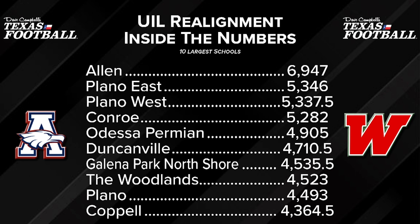If you're wondering what the fly in the ointment for a hypothetical Class 7A is, you're staring at it with Odessa Permian — there's no other school around them to play. A 7A would make sense for Allen and Plano since they could play Duncanville and Coppell, but it does not make sense for Permian. Duncanville and Galena Park North Shore are sixth and seventh — very close in enrollment. Coppell enters the top 10 for the first time at 4,364 — still that rare one-school suburb in the DFW metroplex.